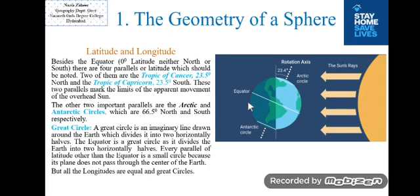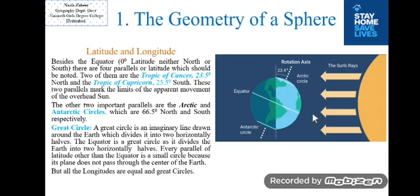Besides the equator at 0 degrees latitude, there are four parallels of latitude which should be noted. Two of them are the Tropic of Cancer and the Tropic of Capricorn, both at 23.5 degrees north and south of the equator. These two parallels mark the limits of the apparent movement of the overhead sun. The other two important parallels are the Arctic Circle and the Antarctic Circle, which are at 66.5 degrees north and south respectively.